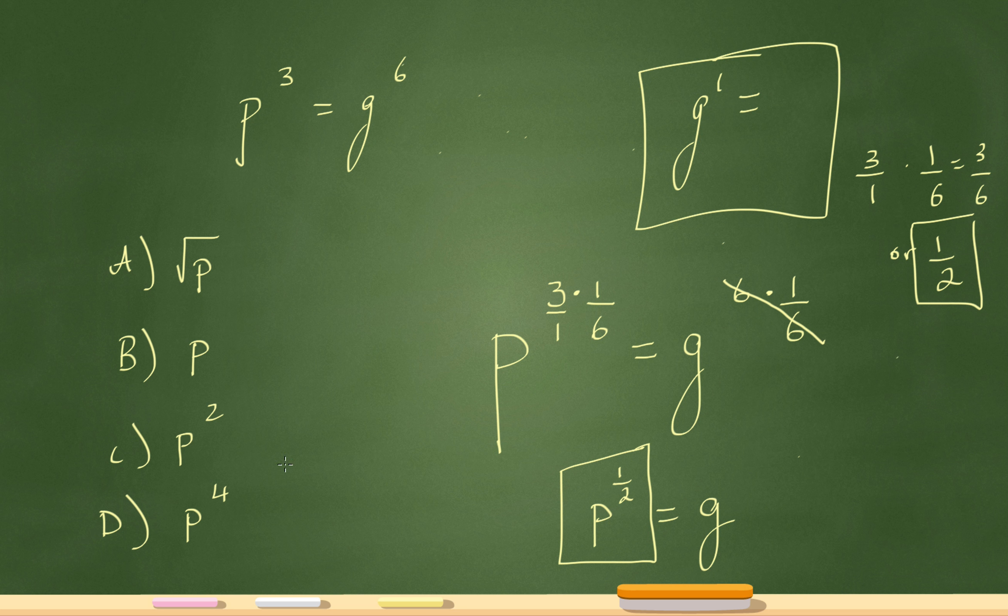Now obviously, that's not in the answer choices written like that. Process of elimination will tell me my answer is A. But one thing to keep in mind is square root of p is actually the same exact thing as p to the one-half.